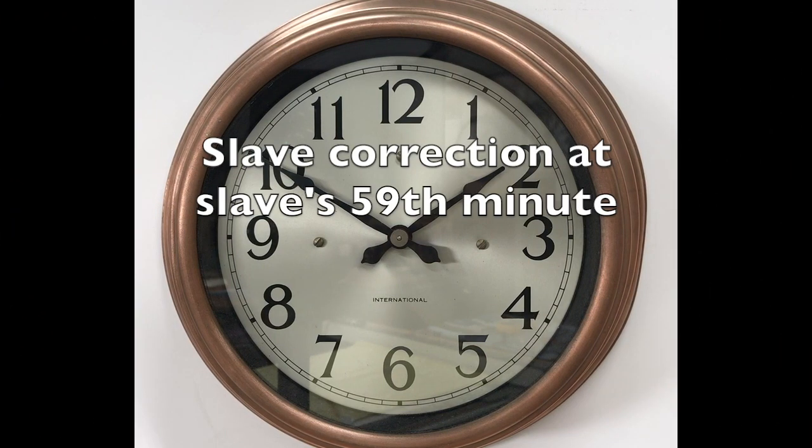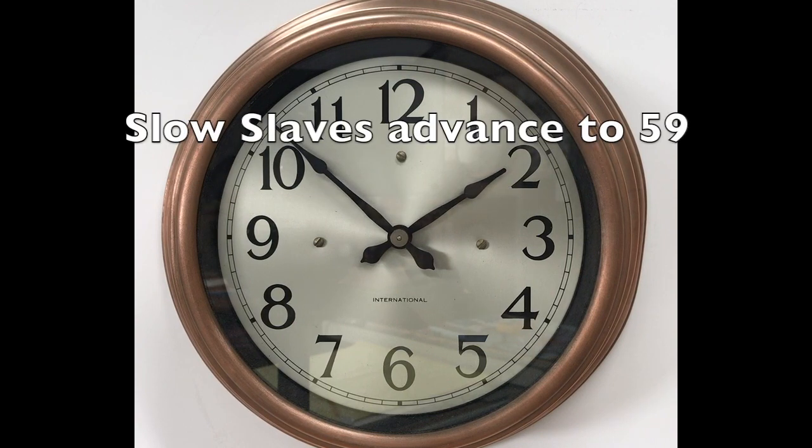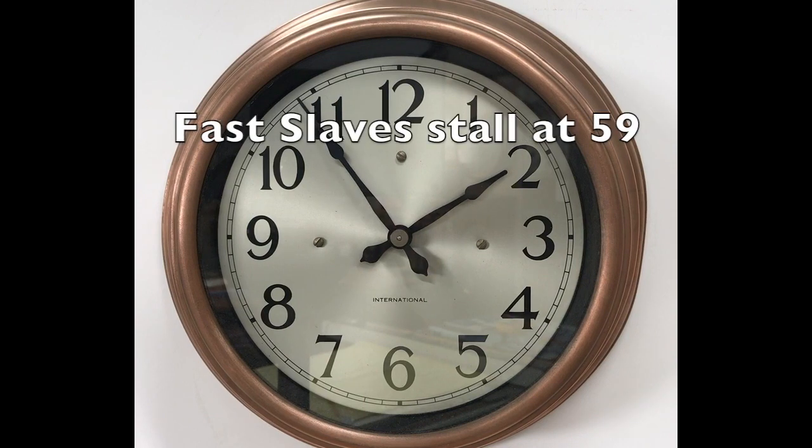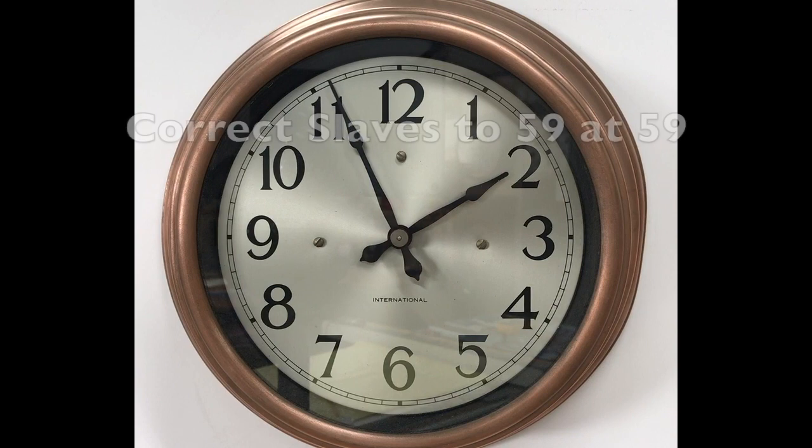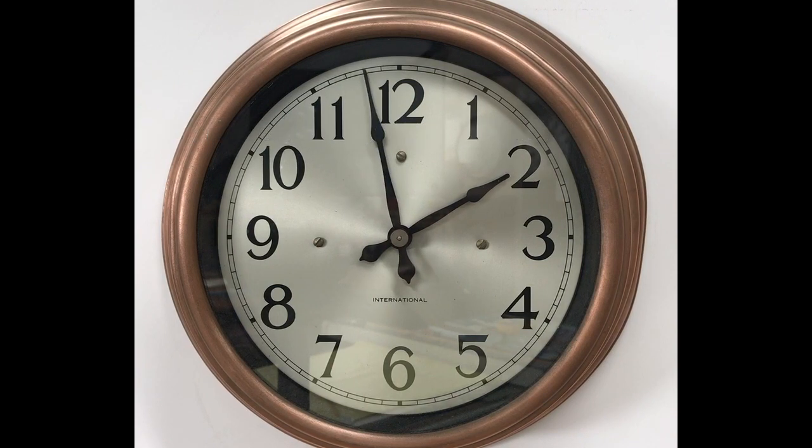Slave correction is at the slave clock's 59th minute. Here a slow slave is advancing to the 59th minute. Fast slaves stalled at the 59th minute and on time slaves arrived at 59 at precisely master clock time. I know this sounds pretty complicated but stick with me and I will explain.